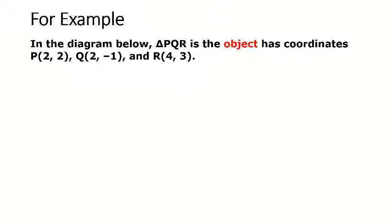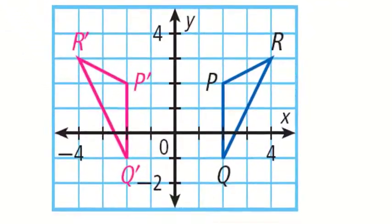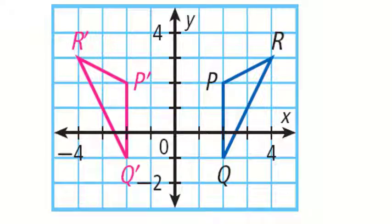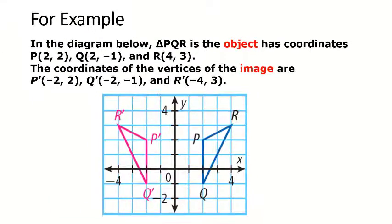Let's look at a typical example of a linear transformation. Consider the diagram below where we have triangle PQR as the object with coordinates P(2,2), Q(2,-1), and R(4,3). The coordinates of the image vertices are P prime(-2,2), Q prime(-2,1), and R prime(-4,3). You can see a typical example on the Cartesian plane with object triangle PQR and image triangle P prime Q prime R prime.